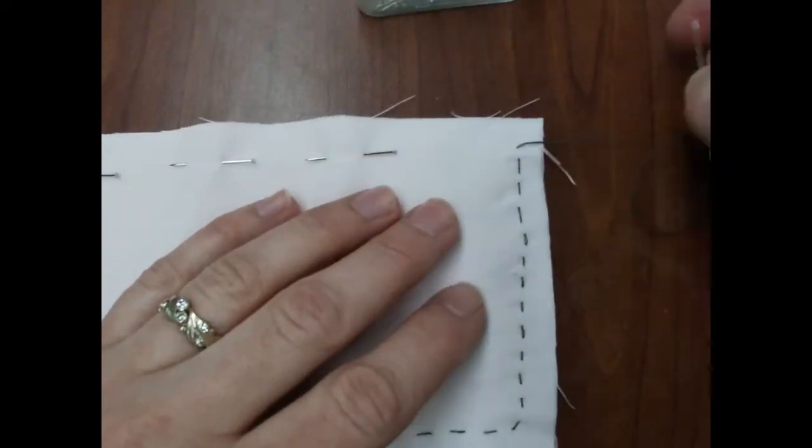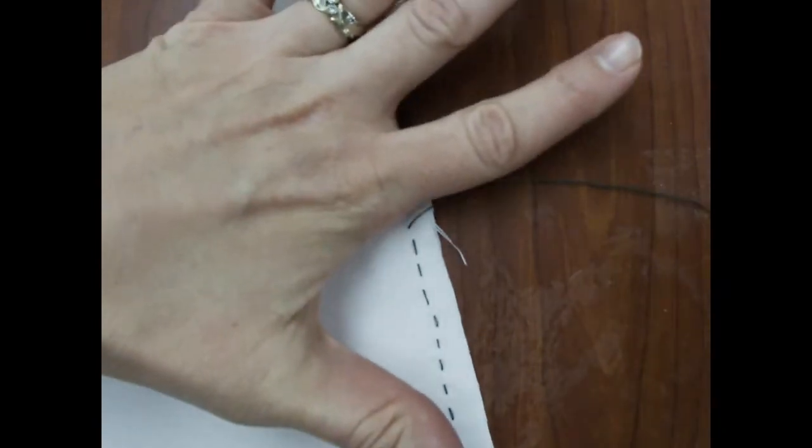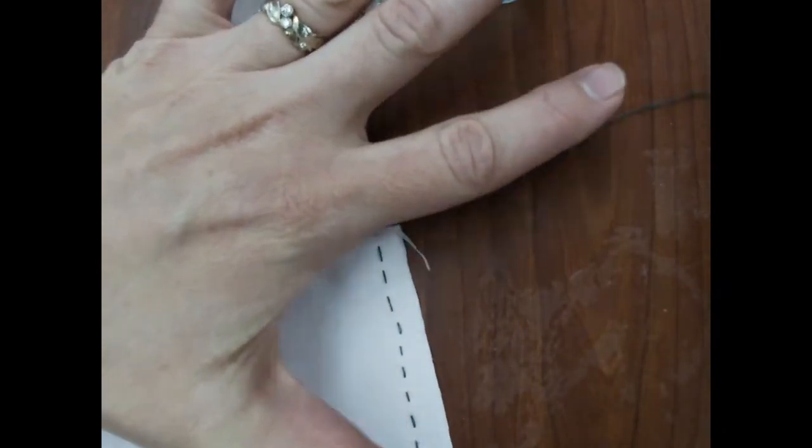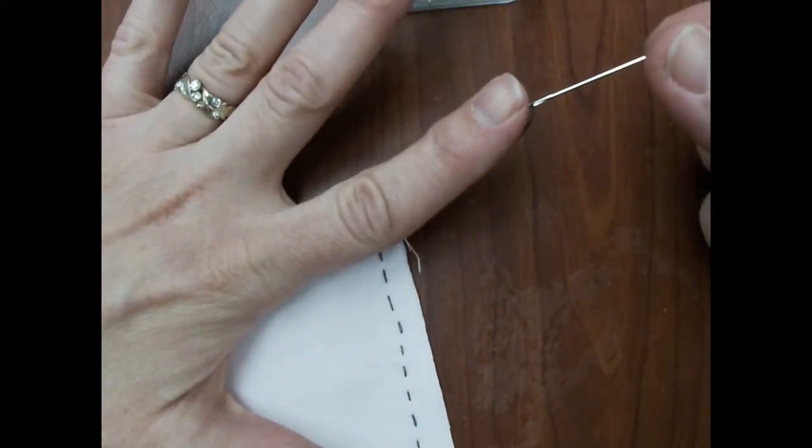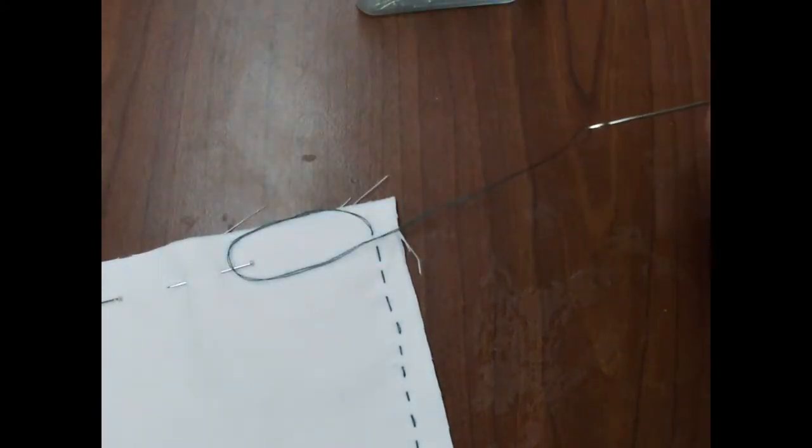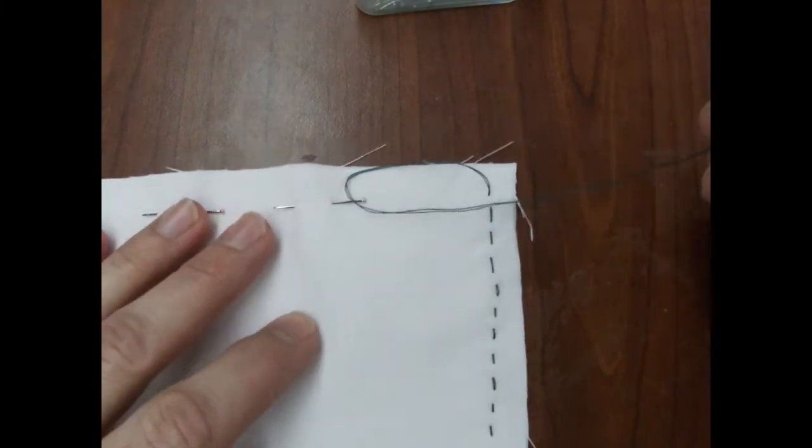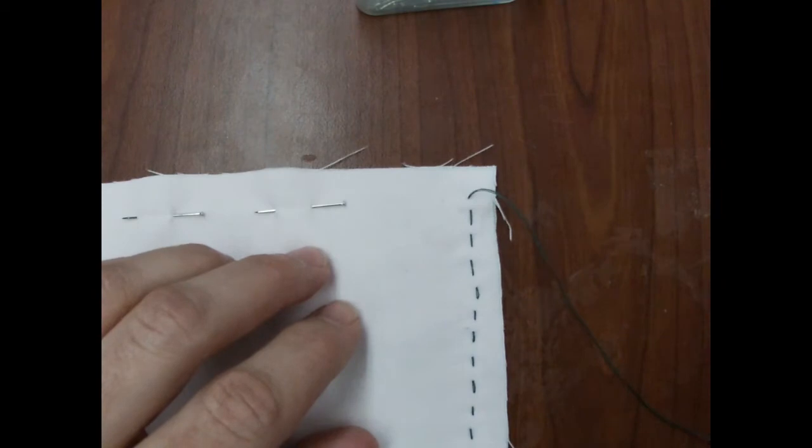When your thread starts running out, this is plenty of thread that I have here, but you want to have thread at least the length of your fingers so that you have enough room to tie. So when you end up with your needle about that far from your last stitch, like the length of a finger, you want to stop and tie a finishing knot. You can always re-thread your needle and continue from there. So from here, I'm going to show a finishing knot.